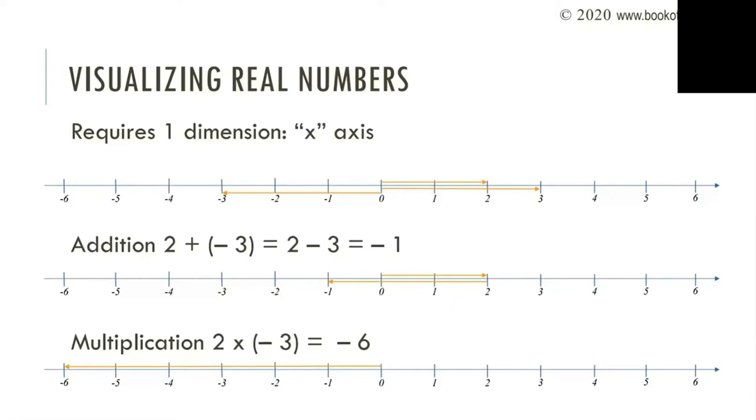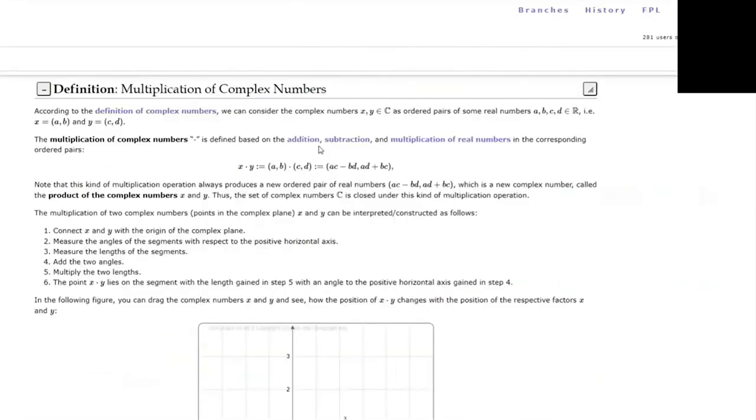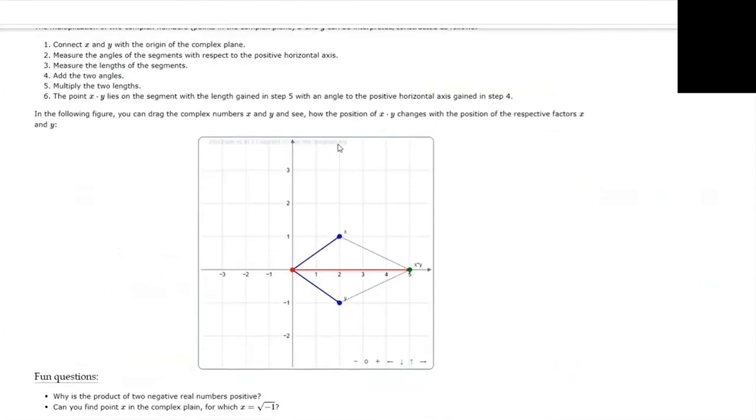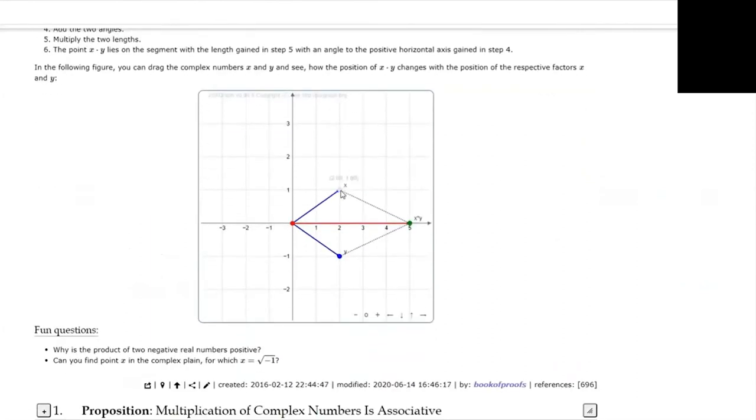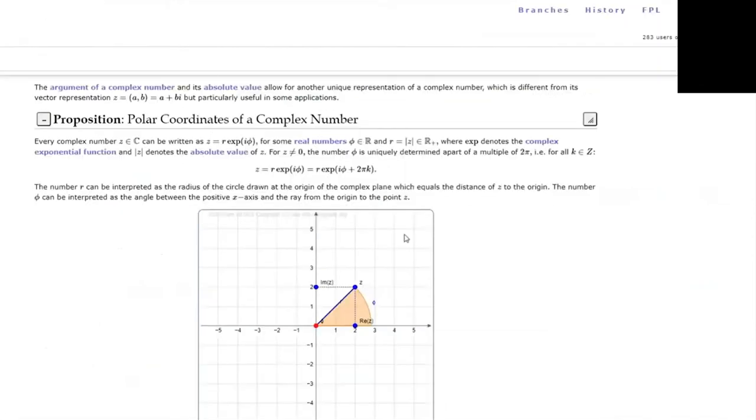Surprisingly, JSXGraph helps students to better understand the sign rules in the real case if we visualize multiplication of complex numbers. To better understand what is happening when we multiply complex numbers, it is instructive, in my opinion, to introduce polar coordinates of a complex number.